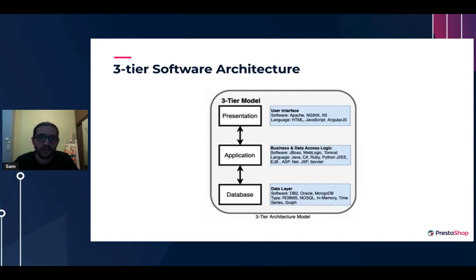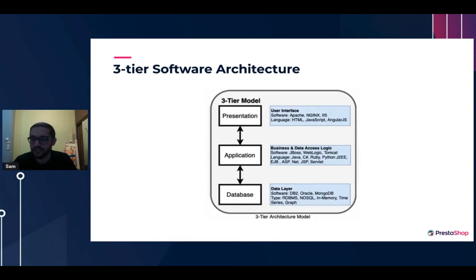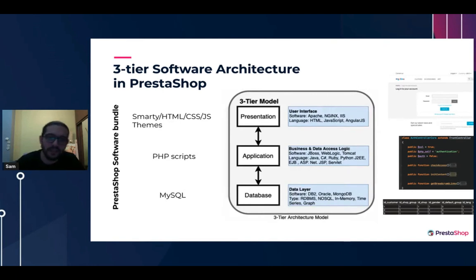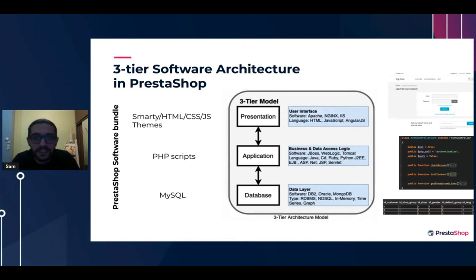Three-tier architecture is about software architecture, so it's not specific to web apps, but almost all traditional web apps fall into this category: presentation layer, business logic or application logic, and database or persistent layer. In PrestaShop, the presentation layer has Smarty and JS, packaged in themes, controllers, and business classes in the application layer.